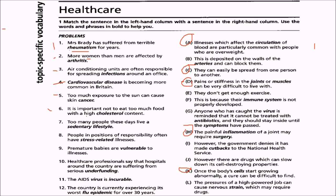Sixth: it is important not to eat too much food with a high cholesterol content. Sixth will match with B — cholesterol is deposited on the walls of the arteries and can block them.